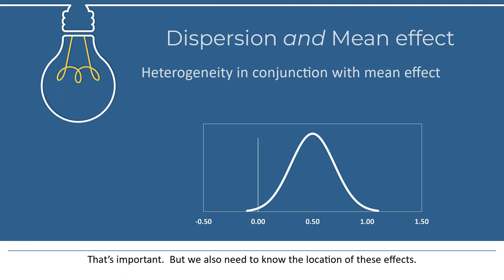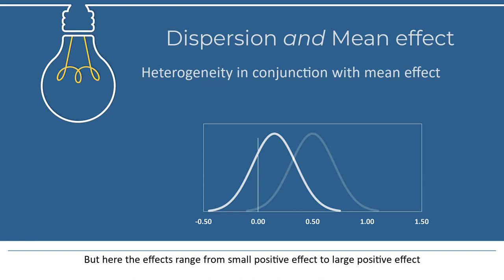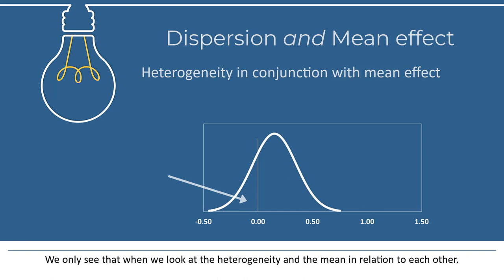For example, suppose that the amount of heterogeneity looks like this. There's obviously a critically important difference between this distribution and this one. In both cases, the amount of dispersion is the same, but here the effects range from a small positive effect to a large positive effect, whereas here there are some populations where the intervention is actually harmful. We only see that when we look at the heterogeneity and the mean in relation to each other. And that's what we're doing with the prediction interval.